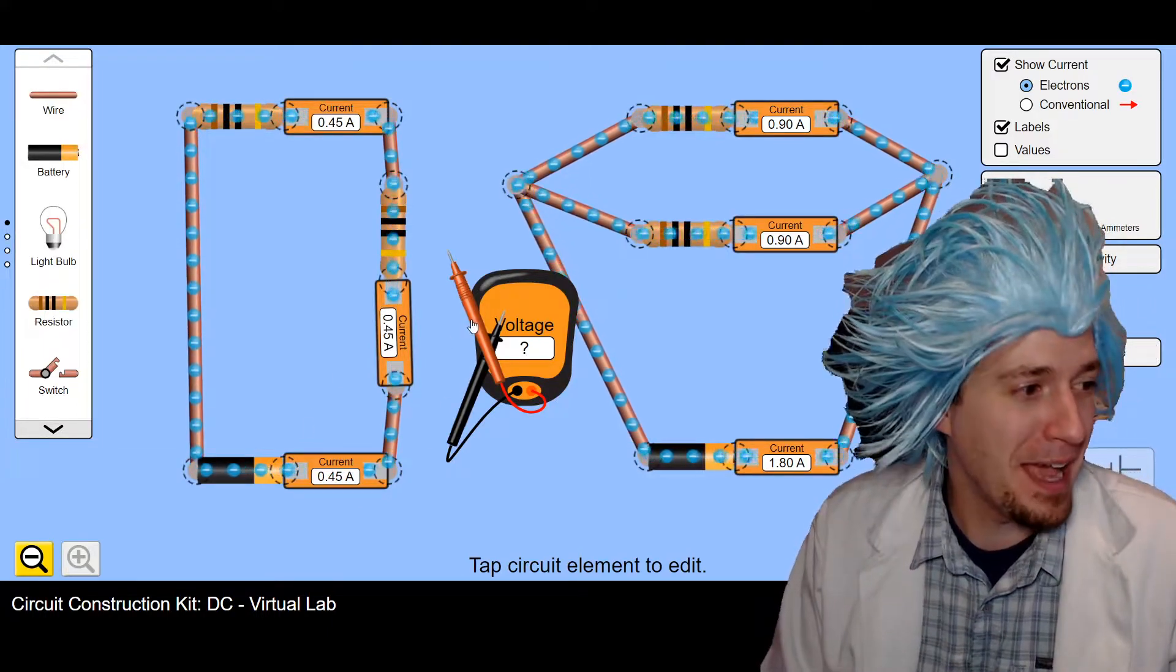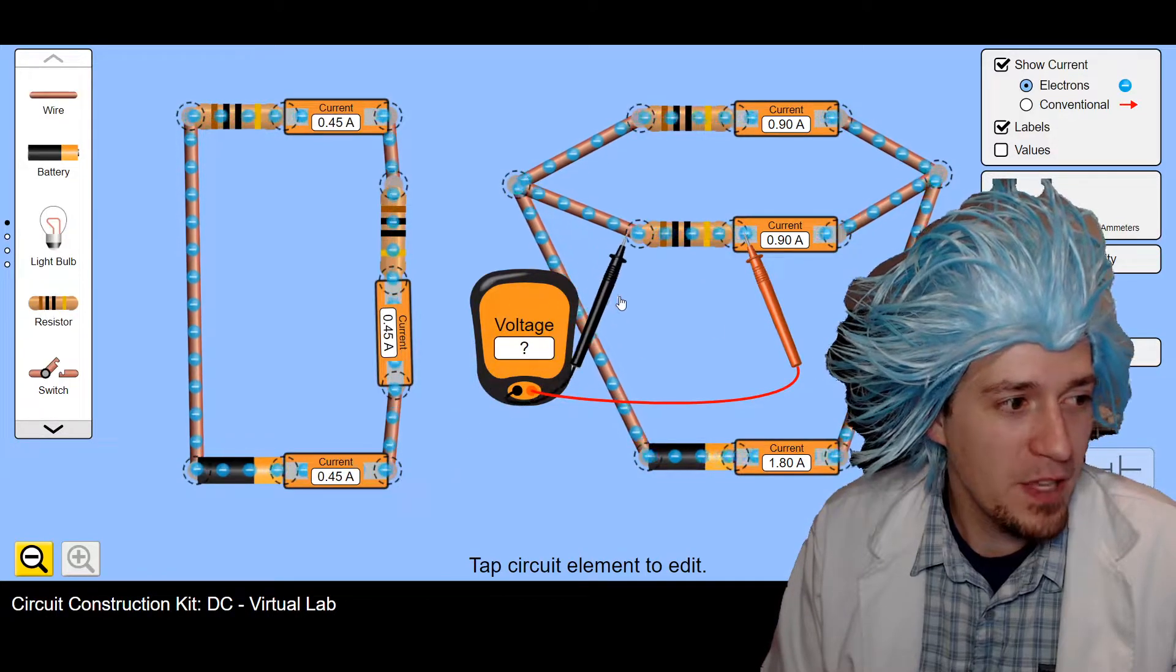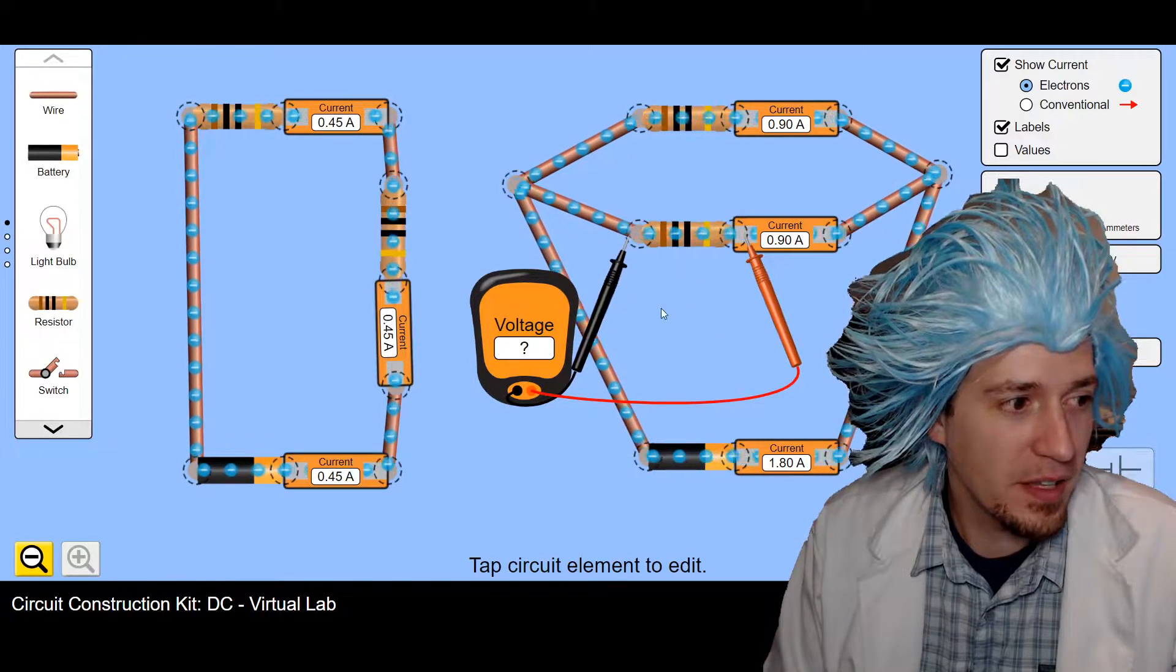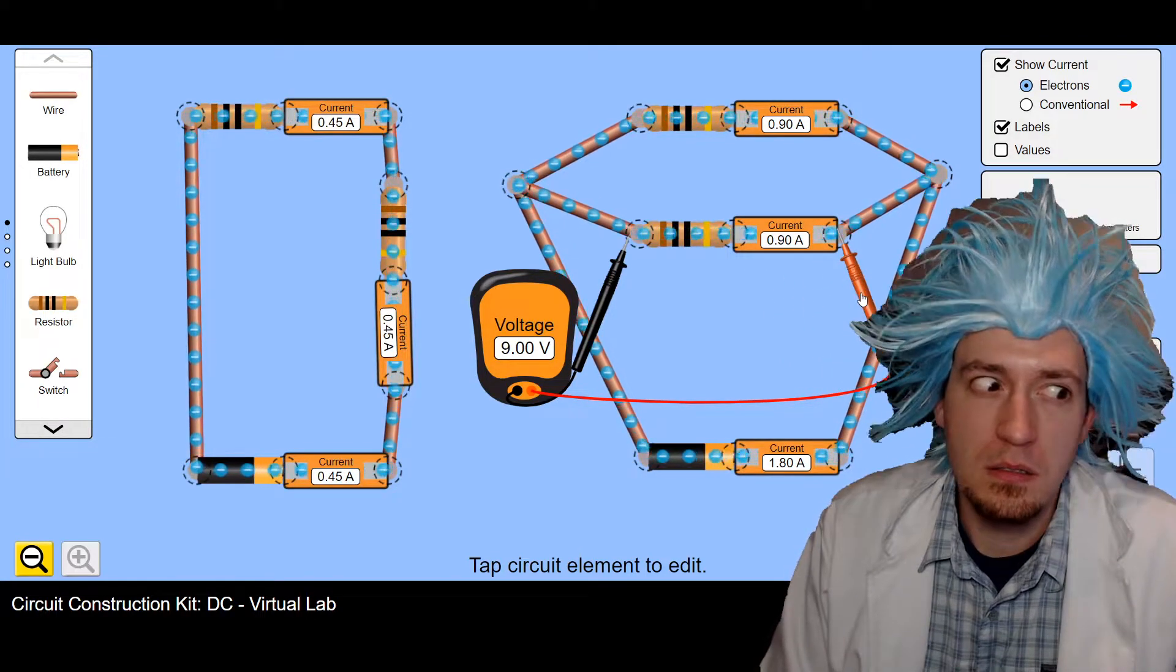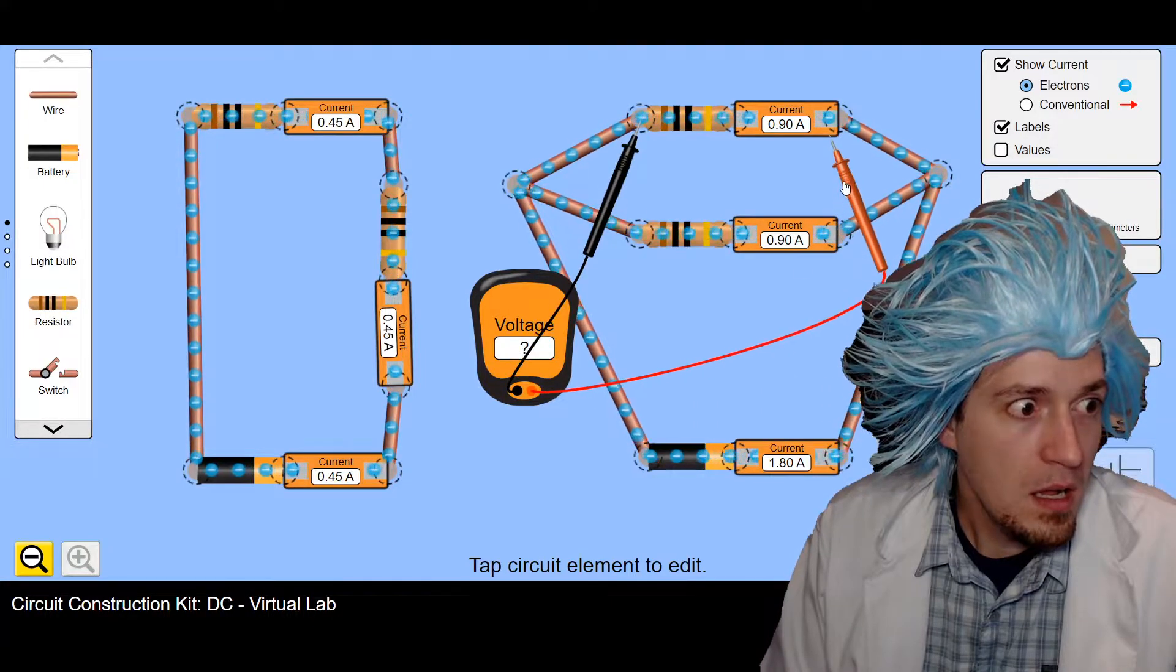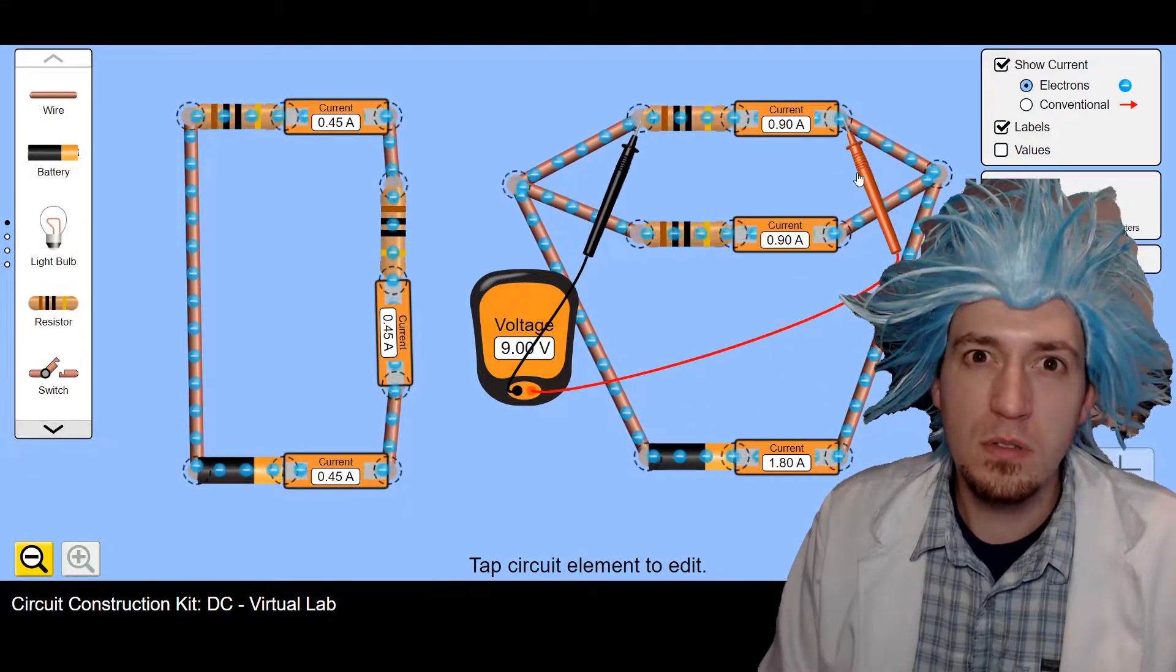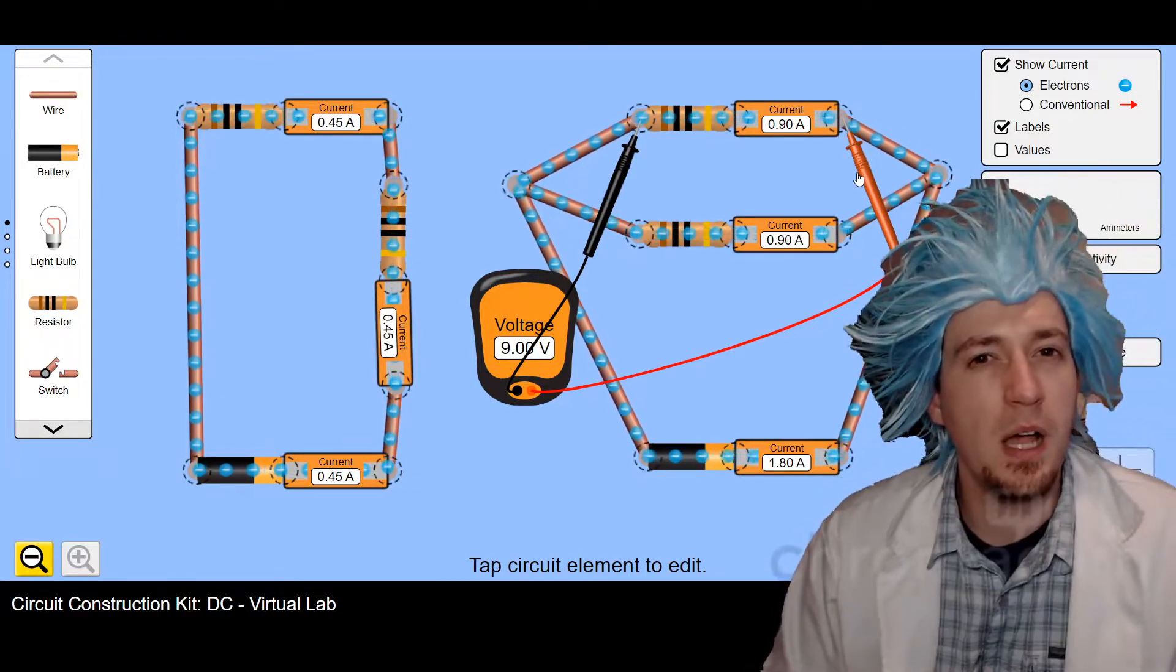But let's check the parallel one now. For the parallel one, we know that again, it's a 9-volt battery, and this one's reading nothing. This one is reading 9 volts. This other one's reading 9 volts! It's almost as if the electrons are only losing their energy in one spot.